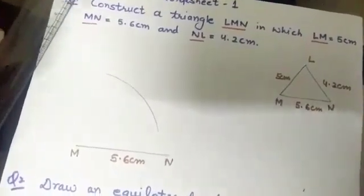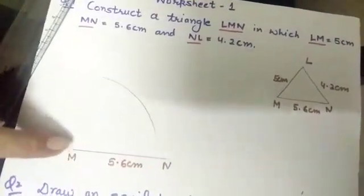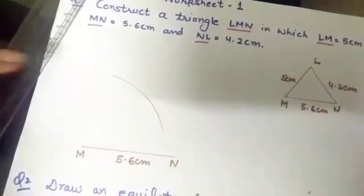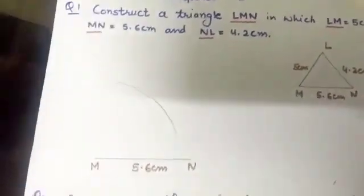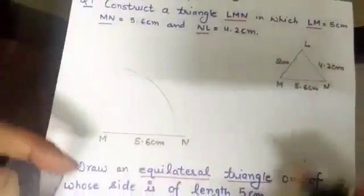As the measurement is LM, taking M as a center and draw the arc freely. Because the name of the side is ML, LM. So M is on the base. So, taking M as a center, open the compass 5 cm and draw this free arc.